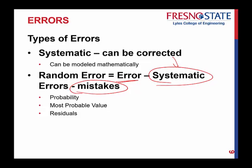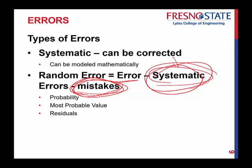Going forward, when we talk about error, we'll assume systematic errors have already been accounted for and mistakes have already been recognized. Random error could be positive or negative — it's up to probability. There's no absolute way to compute or eliminate it, but because it follows probability, there is a way to best estimate it. It won't be exact, but it gives us a good idea of the amount of error truly present.